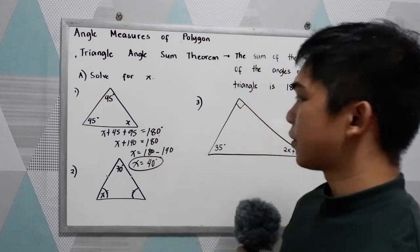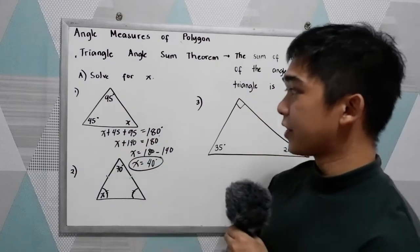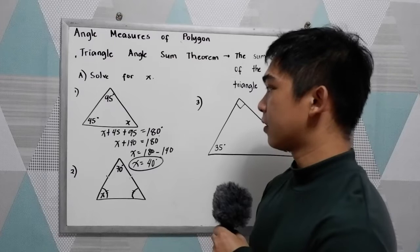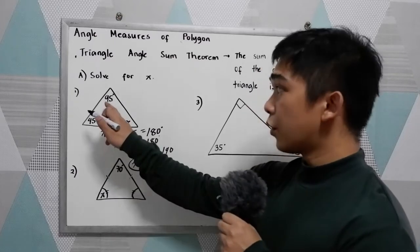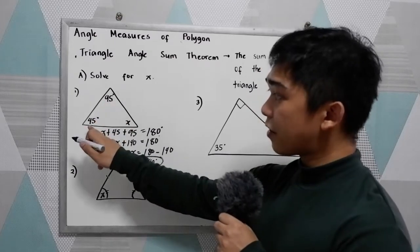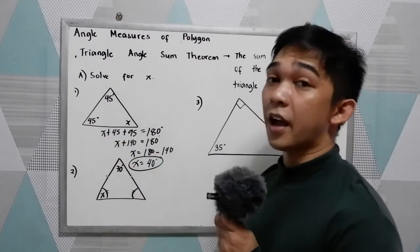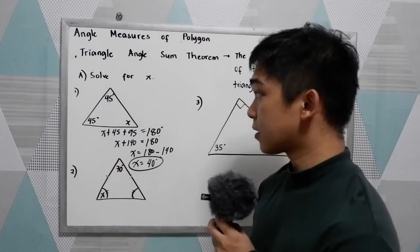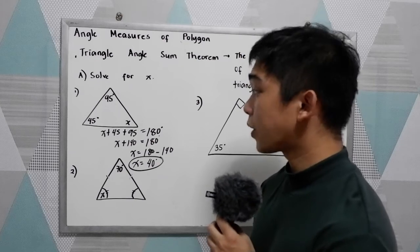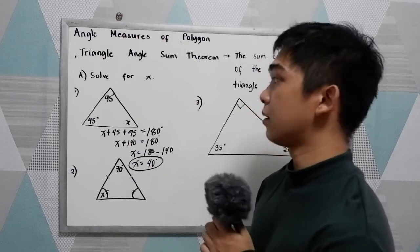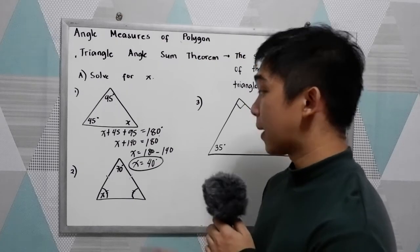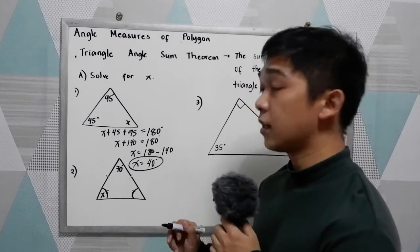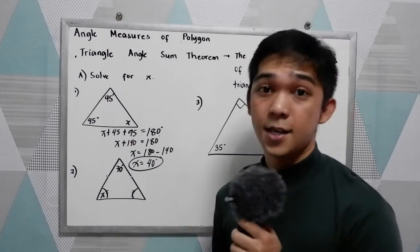So our x is 40. If you want to check: 95 plus 45 is 140, plus 40 is 180.